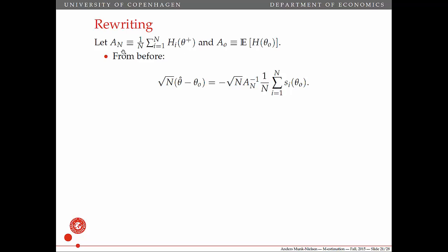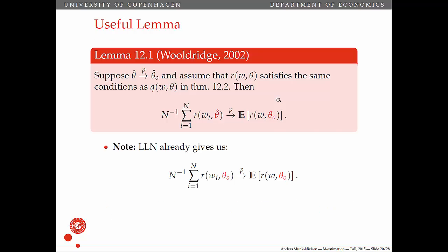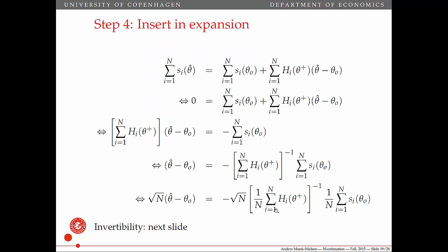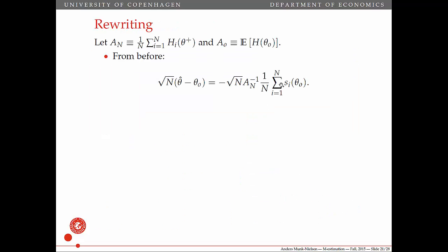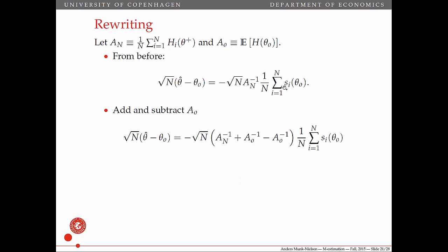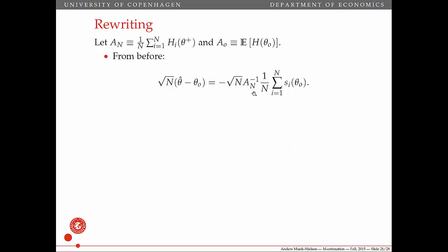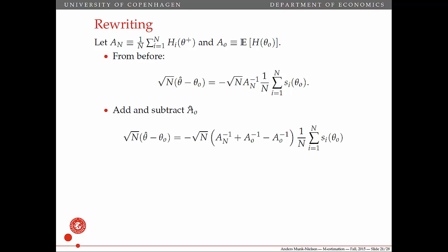Let's shorten up the notation a little bit and call the average Hessian A_n and the probability limit expected Hessian A naught. So what we had before: we call this guy A_n, so A_n to the minus one. Next step: we add and subtract A naught. What we're going to try to do is show that we can swap theta plus by theta naught if we add an op(1) term.